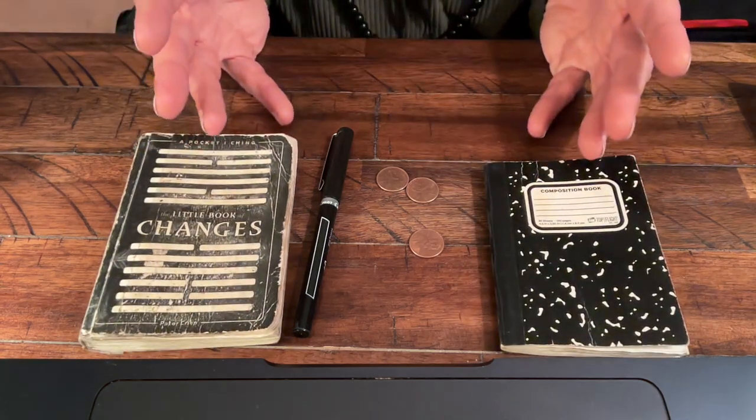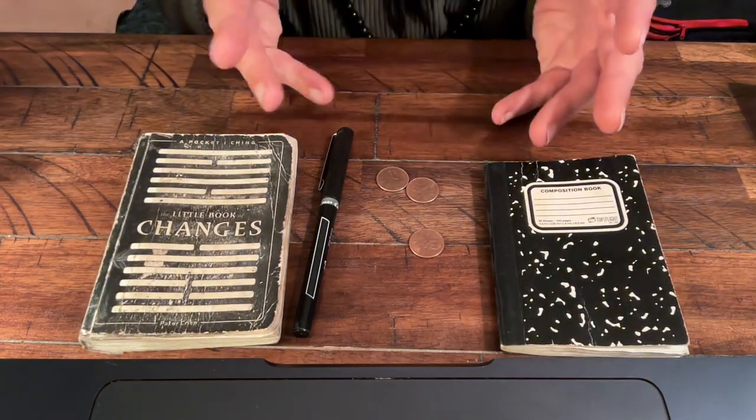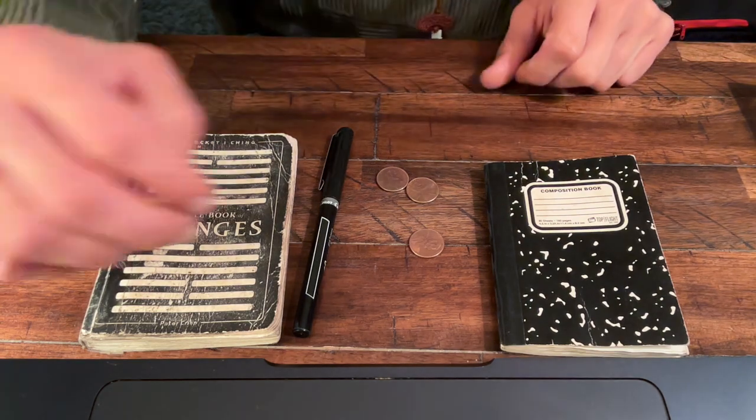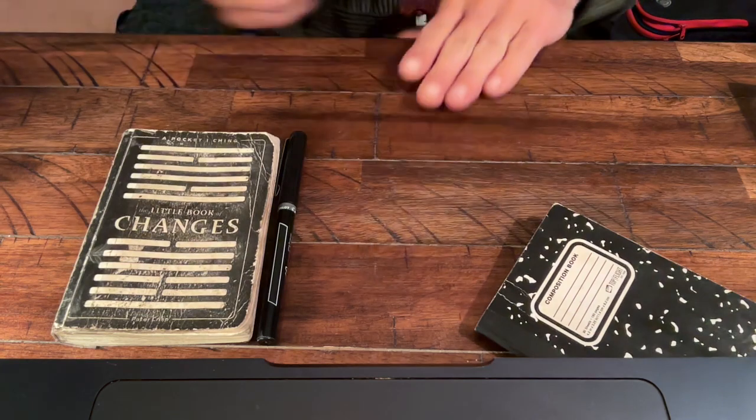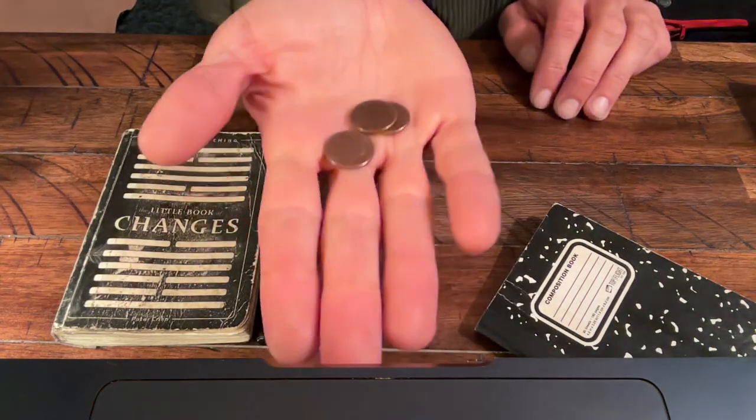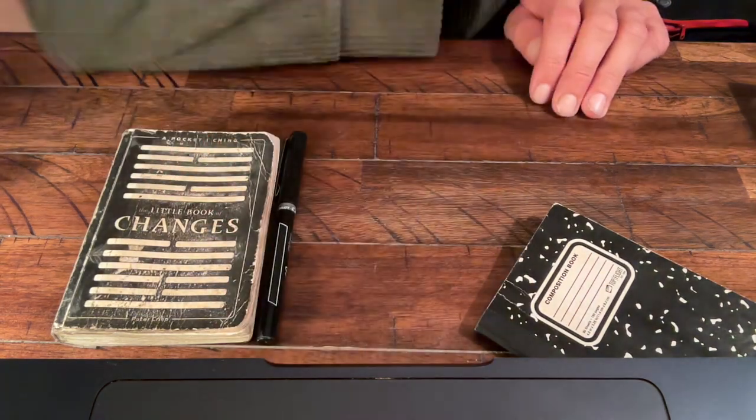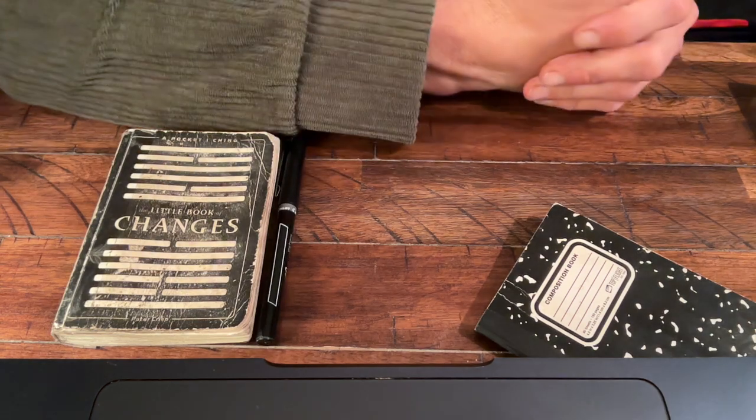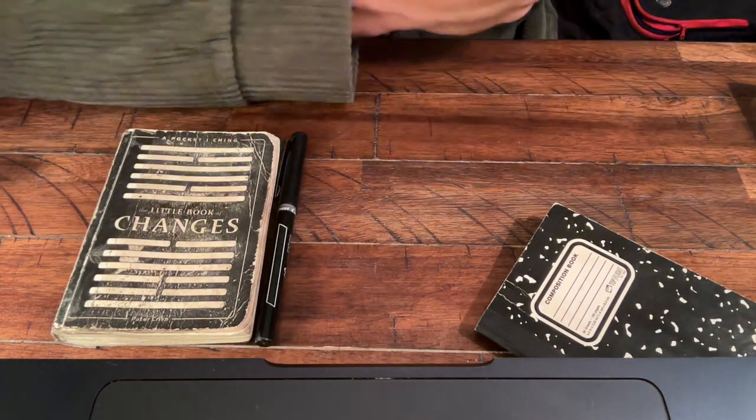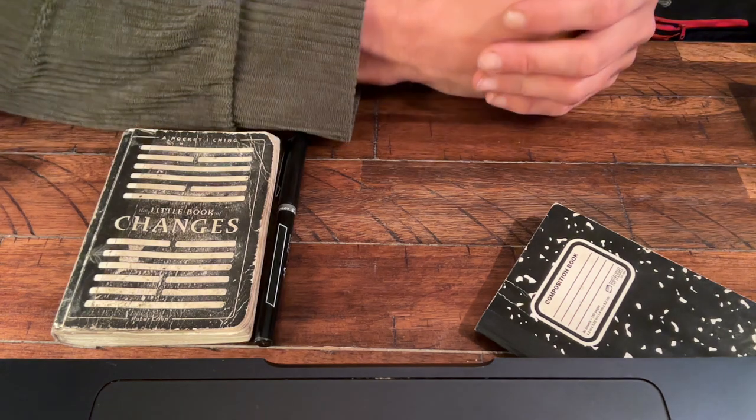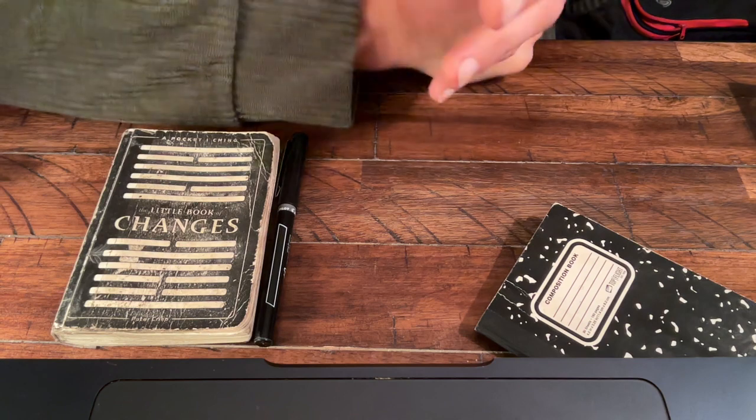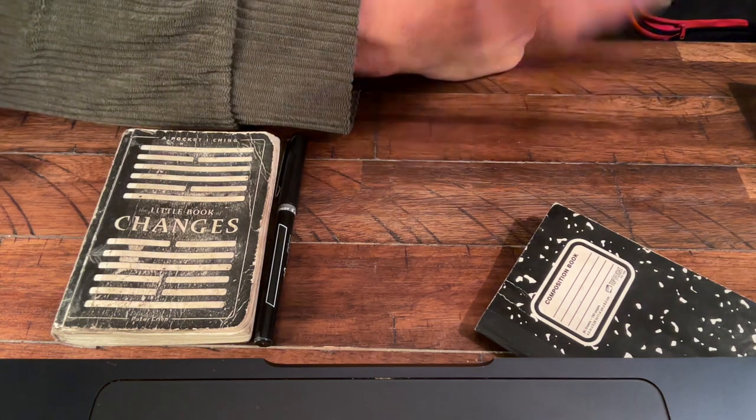I'm going to move through this relatively quickly. You can pause, restart, however much you need. I'm just trying to make a shorter video here. So, three coins in the hand. Clear your mind. Think of your question. I'm going to ask the question, what's going to happen with my mother visiting? So you don't want it to be a yes or no question. You want it to be open-ended, but you want it to be as specific as possible.